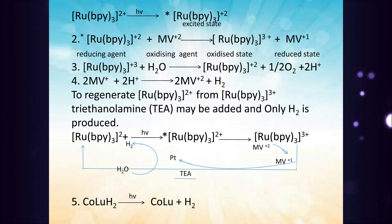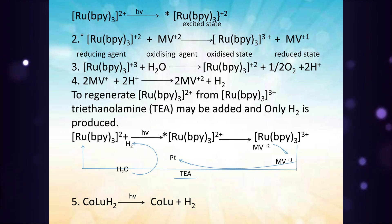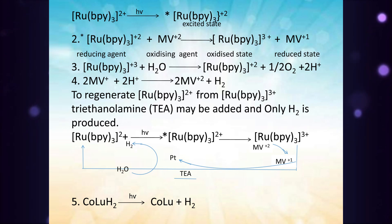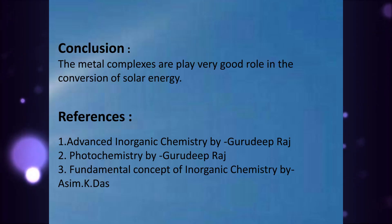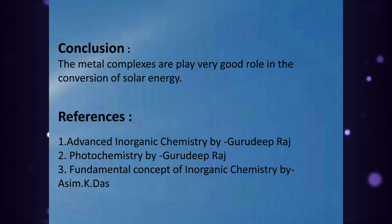Similarly, some hydride complexes of transition metals such as cobalt decompose on irradiation to give molecular hydrogen. In conclusion, metal complexes play a very important role in the conversion of solar energy. Thank you.